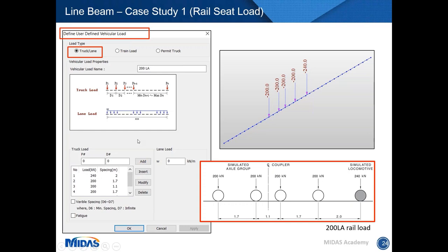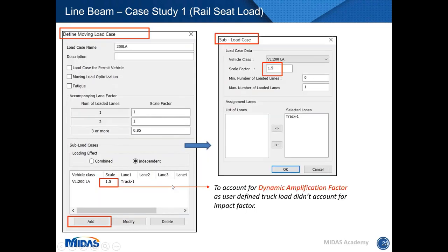Because it is a rail load and Midas does not currently have predefined rail loads for Australian standards, I used the user-defined truck lane vehicular load — inputting axle loads and axle spacing in the window to generate the user-defined vehicle. After defining the vehicle, because it's a single track with a single vehicle, you simply select the vehicle and corresponding track to create the moving load case.